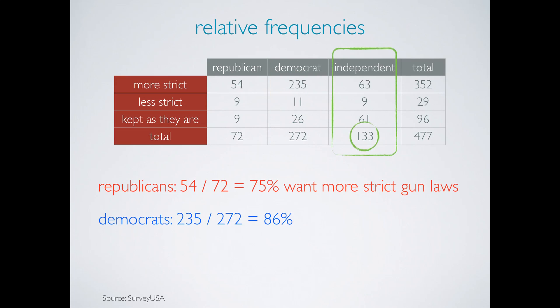Lastly, there are 133 Independents, and 63 of them want more strict gun laws. That makes roughly 47% of Independents who want more strict gun laws.